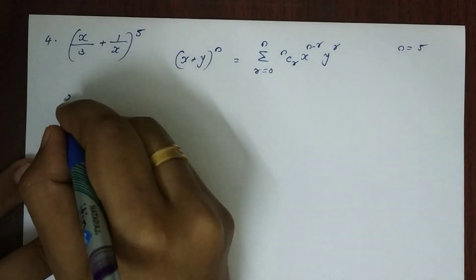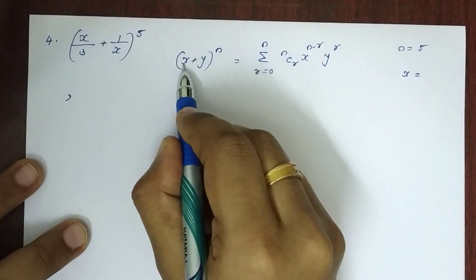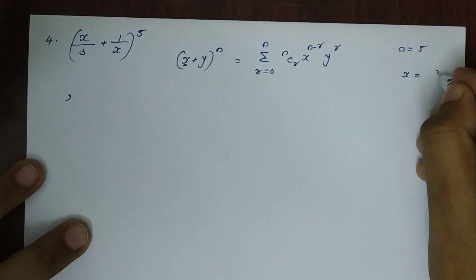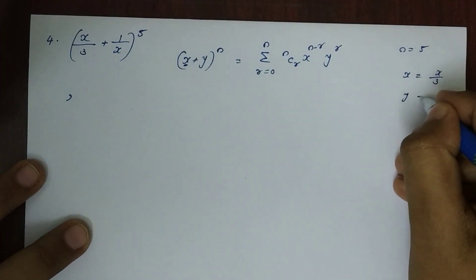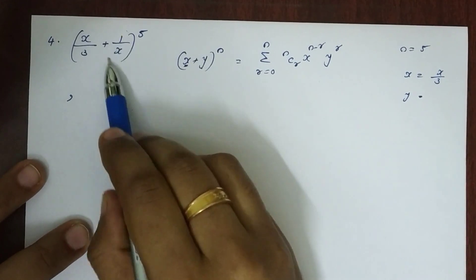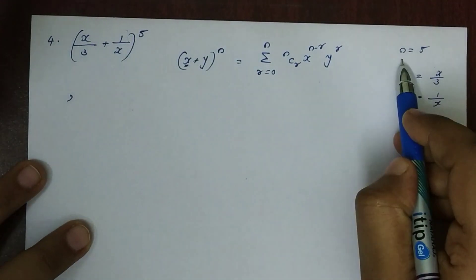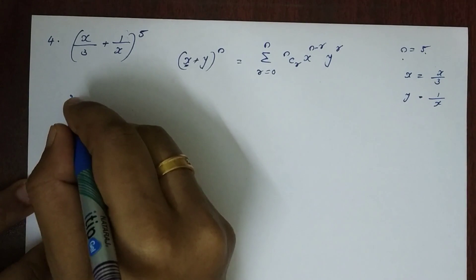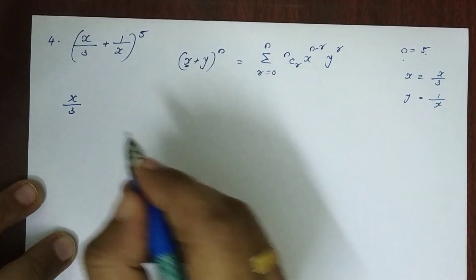For the fourth question, we expand (x/3 + 1/x) raised to 5 using the binomial theorem. Here x is the first term, x/3, and y is the second term, 1/x, with n equal to 5. Now we will expand using the binomial theorem.